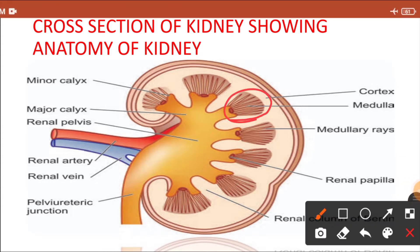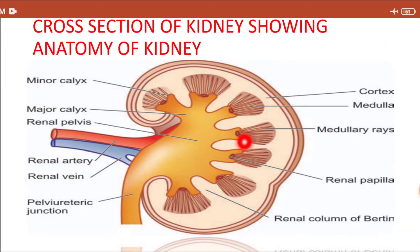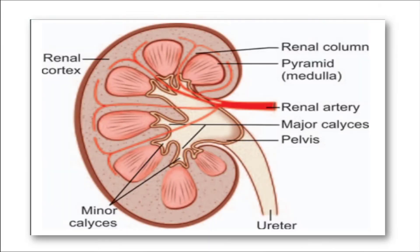This triangular structure in the medulla is known as the renal pyramid. These renal pyramids will open into the minor calyces through the renal papilla. The minor calyces will again open into major calyces, which will ultimately drain the urine into the pelvis, and that will ultimately open into the ureter.